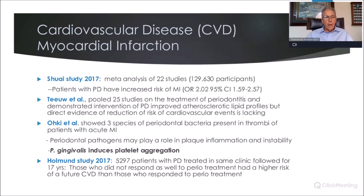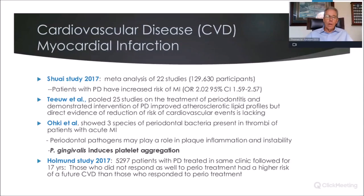Tzu pooled 25 different studies on the treatment of periodontitis and demonstrated that periodontal disease intervention improved atherosclerotic lipid profiles, but found no direct evidence of a reduction in risk of cardiovascular disease. As we talked about — association versus causality — this study showed patients who had periodontal treatment did not show a reduction in their risk of having a future cardiovascular event. That really speaks to causality.